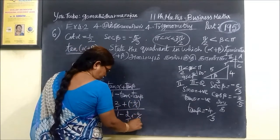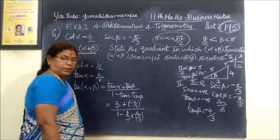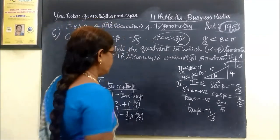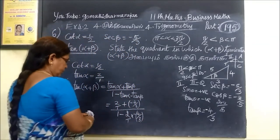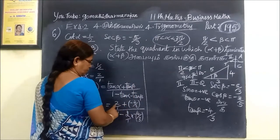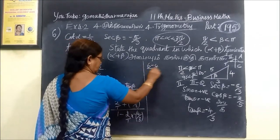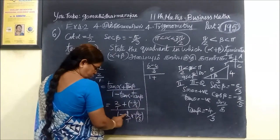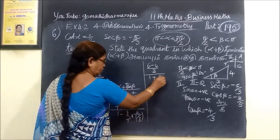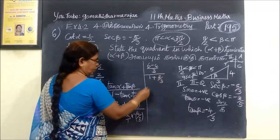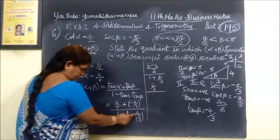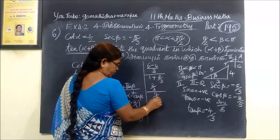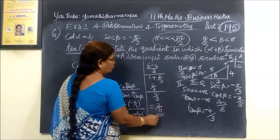So tan beta is minus 4 by 3. Now substituting into the formula and cross multiplying. Minus and minus gives plus. 3 plus 8 is 11 by 3, then 3 and 3 cancel, giving us 2 by 11.